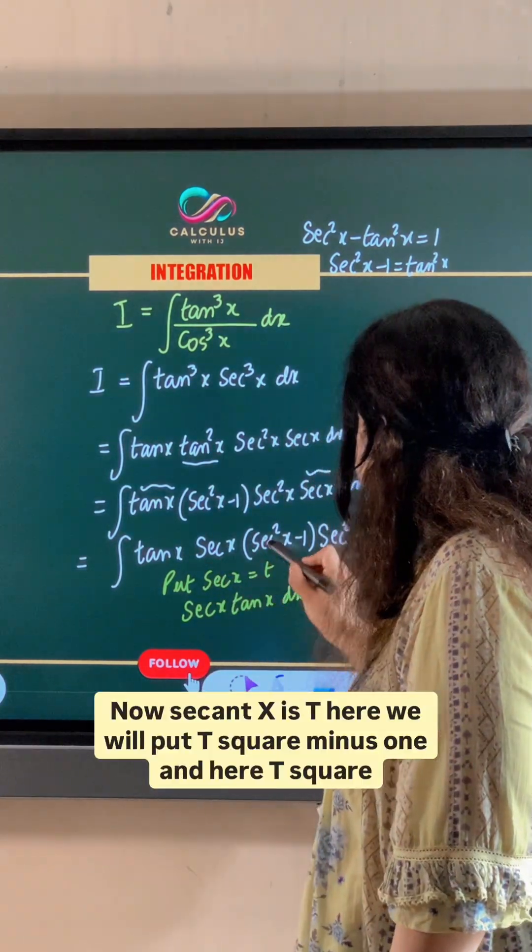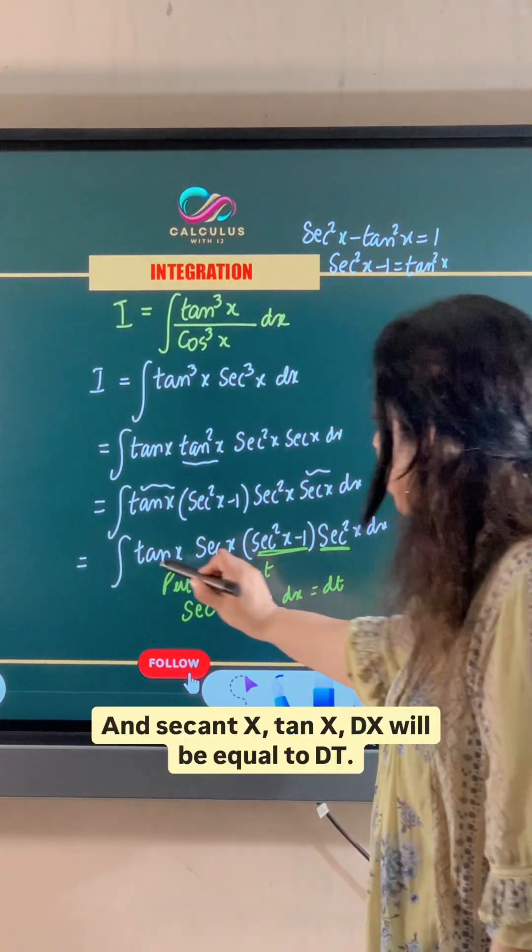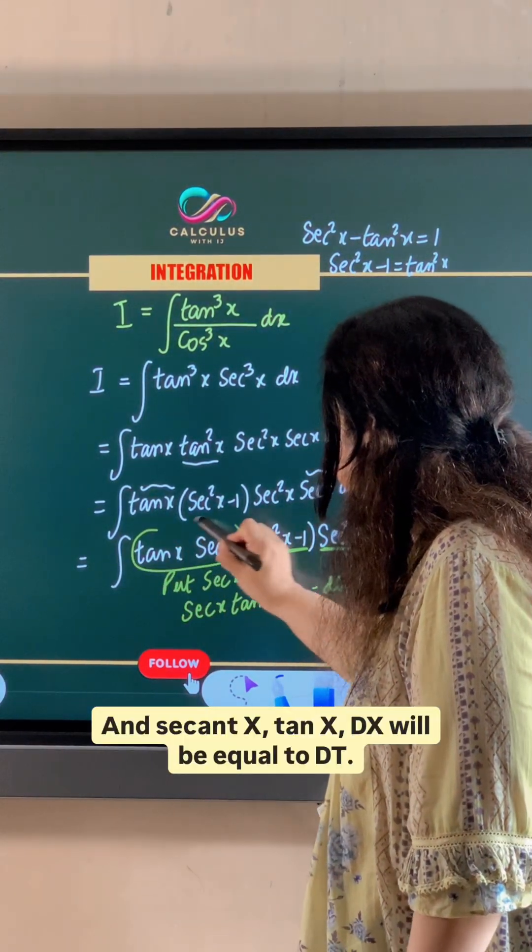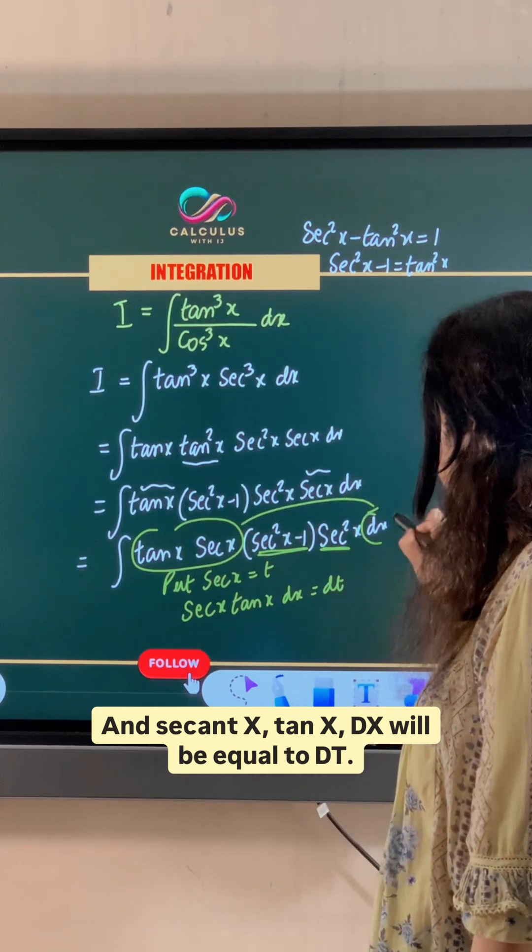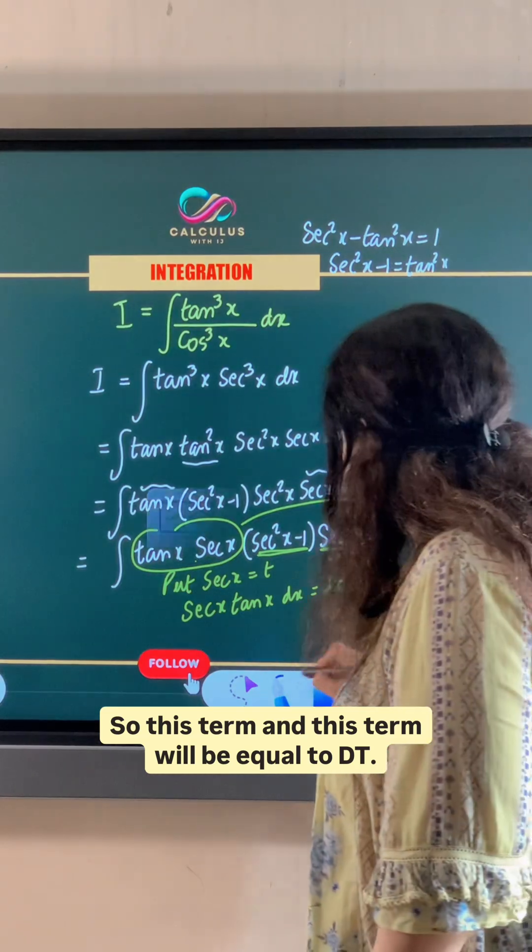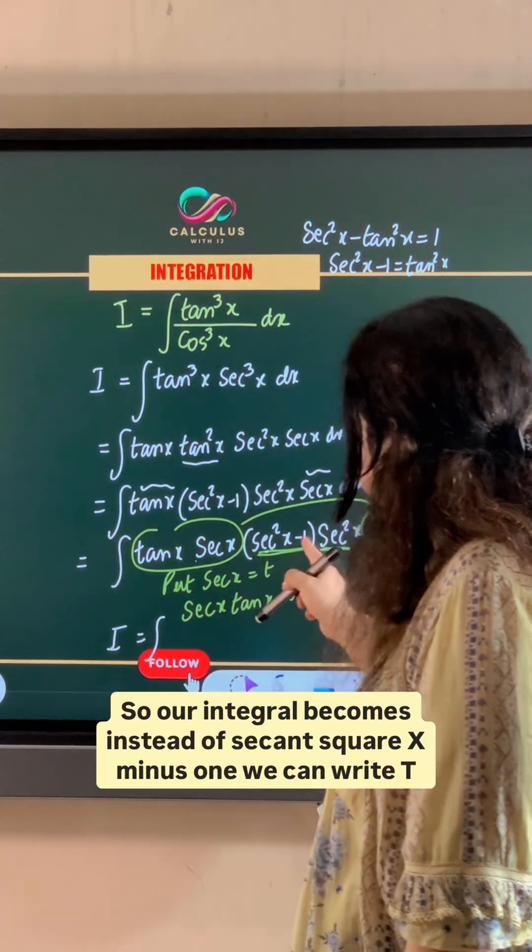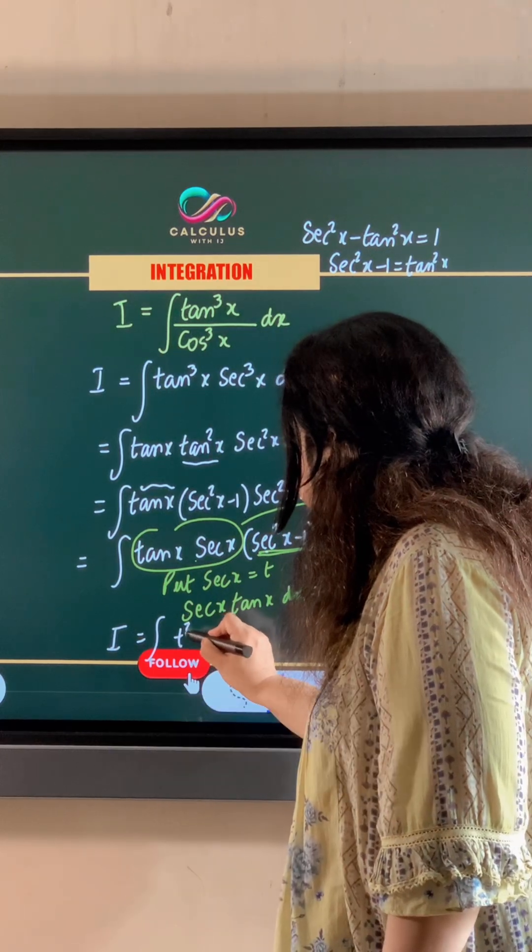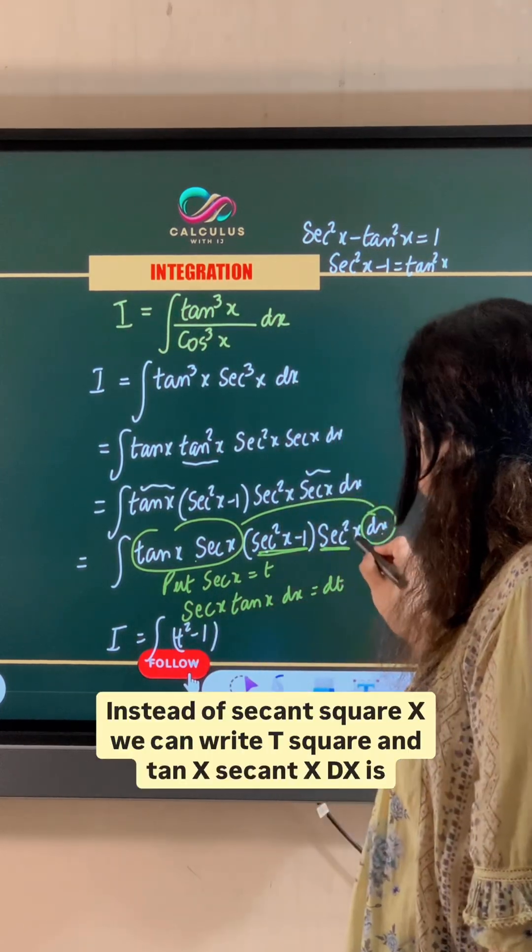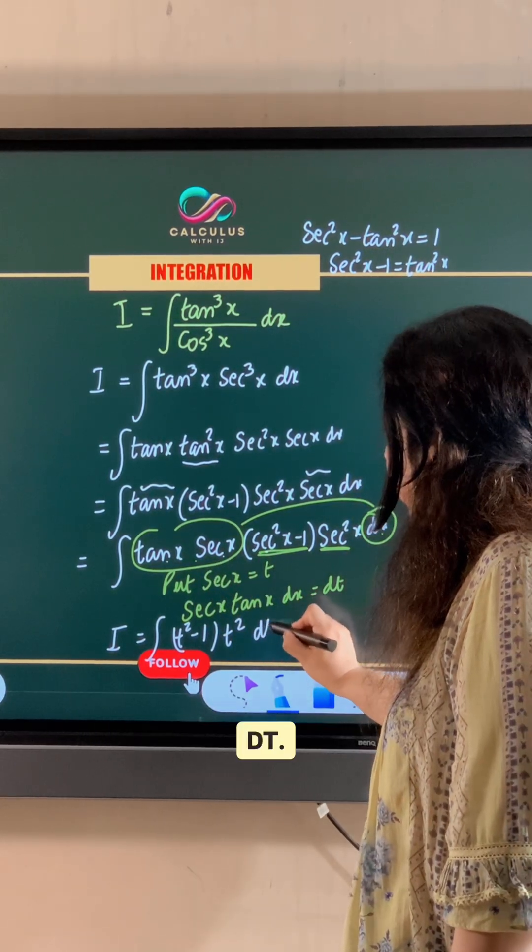Now secant x is t. Here we will put t square minus 1 and here t square and secant x tan x dx will be equal to dt. So this term and this term will be equal to dt. So our integral becomes, instead of secant square x minus 1, we can write t square minus 1. Instead of secant square x, we can write t square and tan x secant x dx is dt.